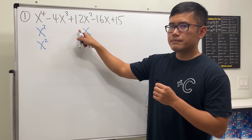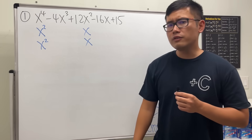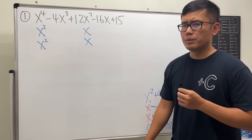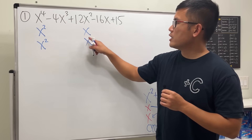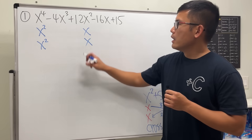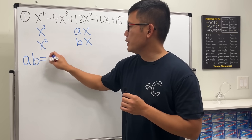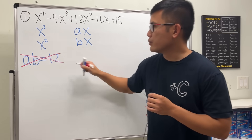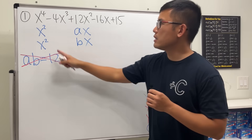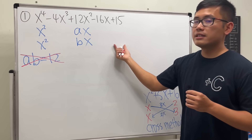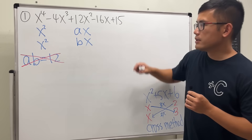We need to ask what should we put in the linear terms of each factor. We cannot just look at the constant term 12 and ask what times what gives 12. It's not true that a times b has to equal 12, because that's not the only way to produce that term — we also have to consider the x squared term of one factor times the constant of the other.